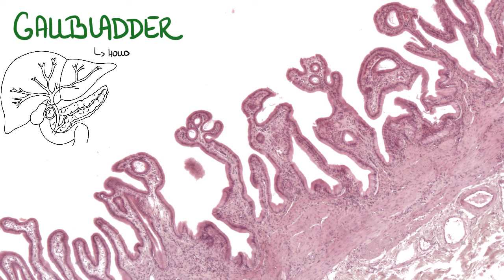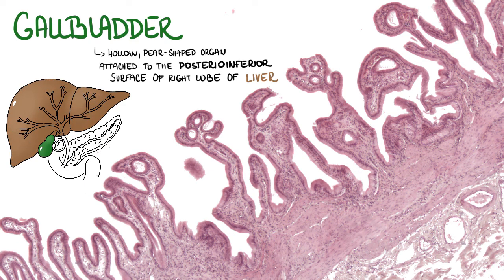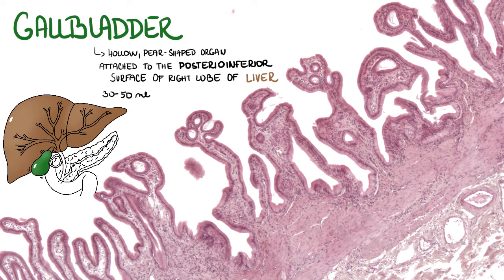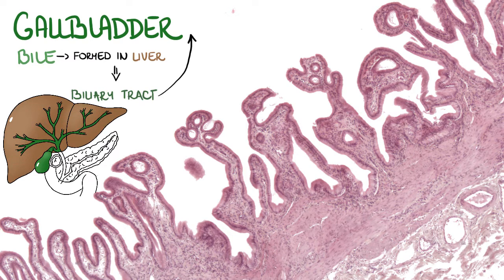The gallbladder is a hollow, pear-shaped organ attached to the posterior-inferior surface of the right lobe of the liver. It is a distensible sac that may contain 30–50 ml of bile. Bile is formed in the liver, then passed by the biliary tract to the gallbladder, where it is concentrated.